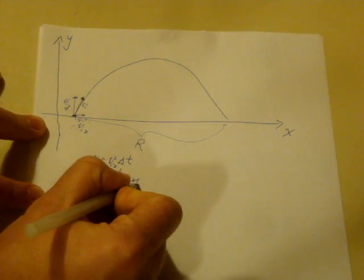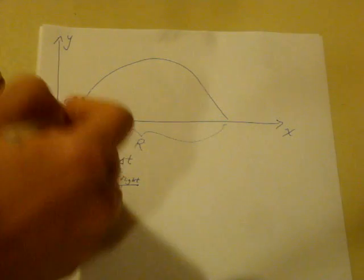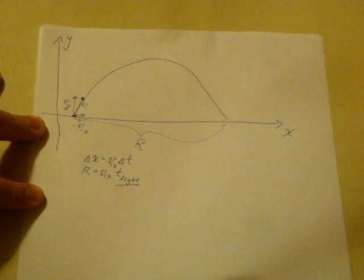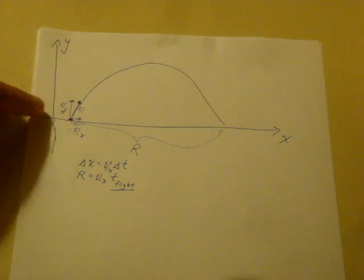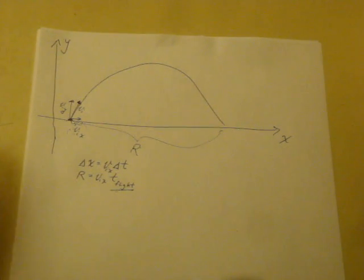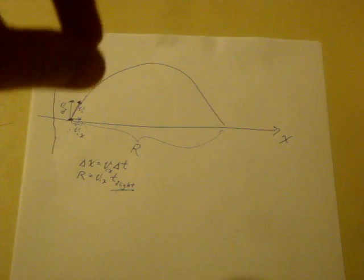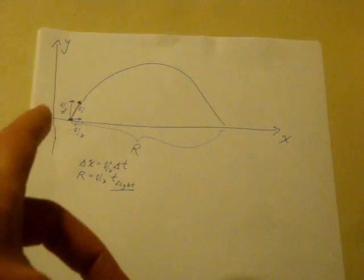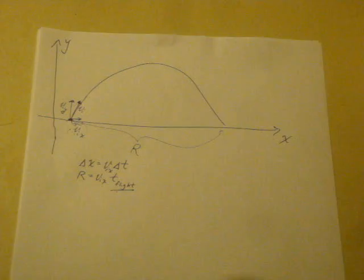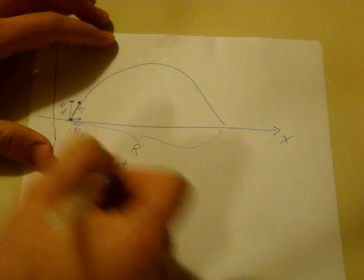So we need to be able to figure out what this flight time is, and the flight time actually is going to depend on what the vertical velocity is. The larger the initial velocity is in the vertical direction, the longer it's going to be in the air. If it's very large, it needs to slow down because it's accelerating downward until it reaches zero, and then the velocity goes from being upward and decreasing to being downward and increasing.